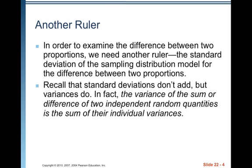In order to examine the difference between two proportions, we need another ruler, the standard deviation of the sampling distribution model for the difference between two proportions. Recall that the standard deviations don't add, but variances do. In fact, the variance of the sum or difference of two independent random quantities is the sum of their individual variances.